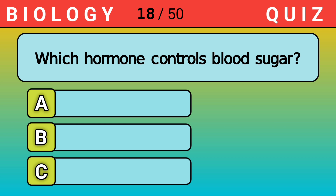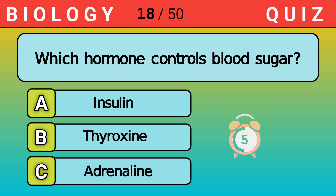Which hormone controls blood sugar? Answer A. Insulin.